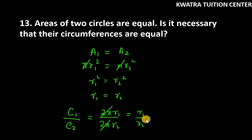Aur r1 over r2 jab hamaare equal hain. Toh, umko hama cancel out kar dheenge. And we get 1. Iska matlab, C1 over C2 is equal to 1. Aur C2 ka agar aap right hand side dekha jao ge, it will be C1 equal C2.